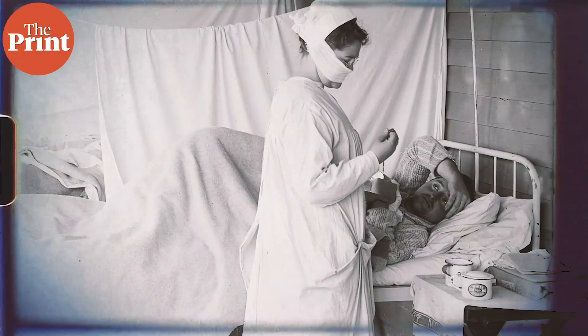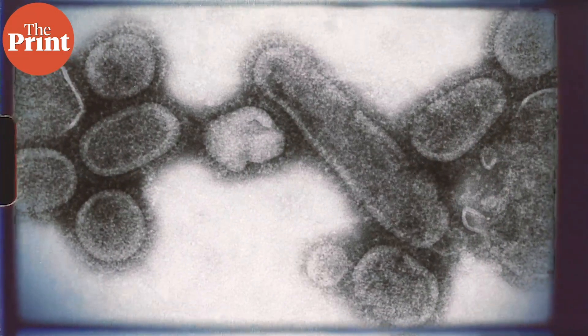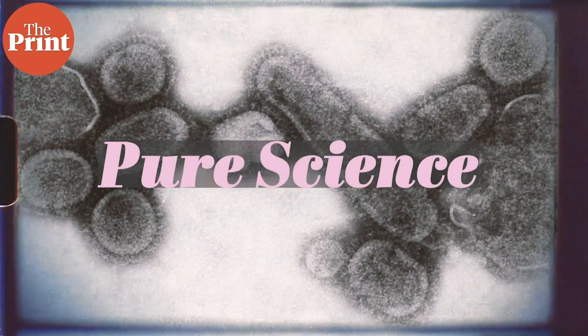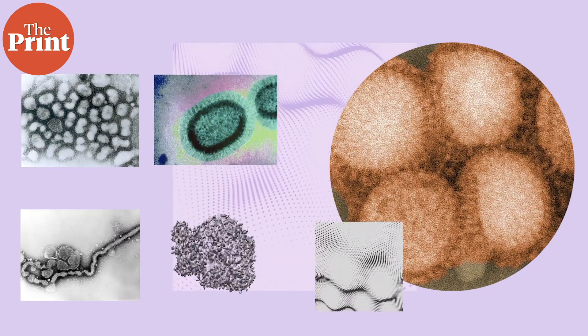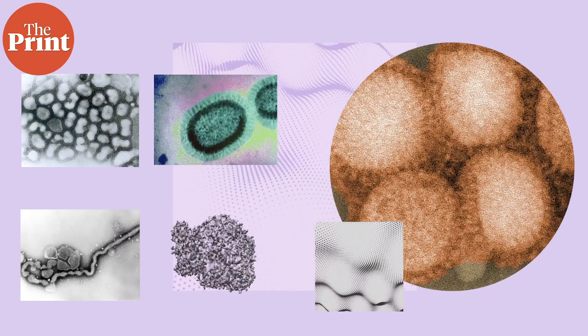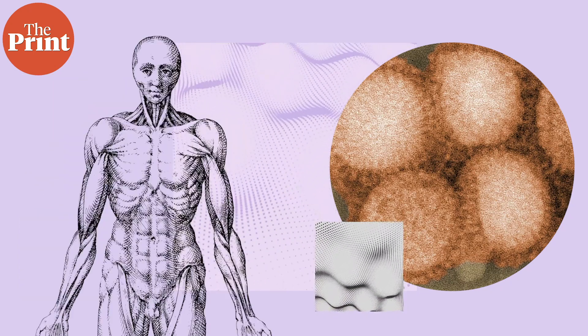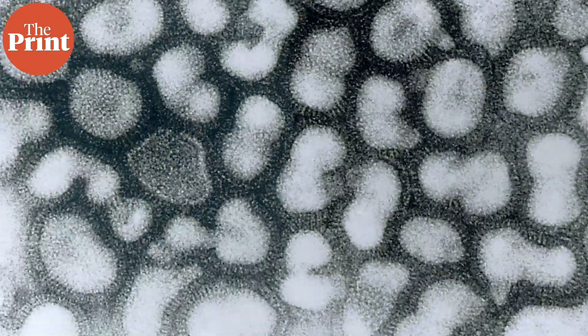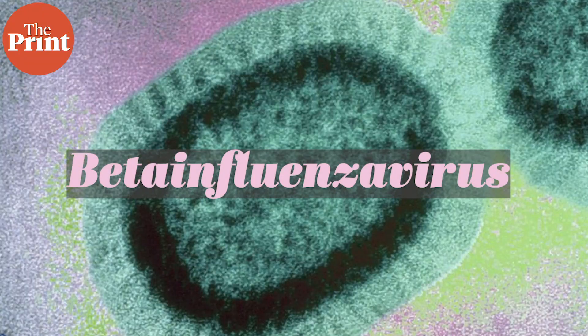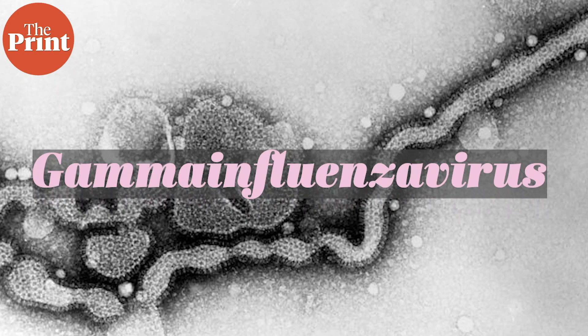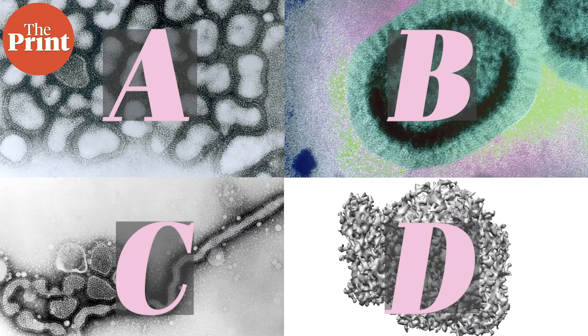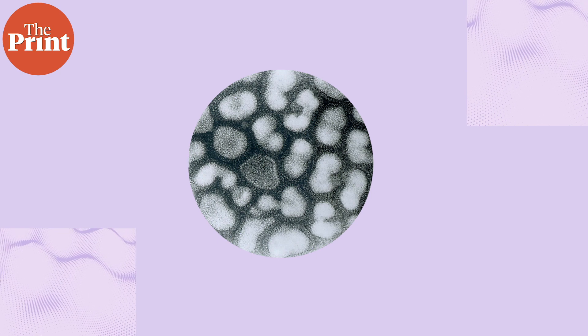We'll also look at what animals this virus affects and how humans have been preparing to deal with an influenza pandemic should one occur anytime soon. I'm Sandhya Ramesh and this is Pure Science. There are four genera of the influenza viruses that can affect vertebrates including birds, mammals, and humans. These four are the alpha influenza virus, the beta influenza virus, the gamma influenza virus, and the delta influenza virus.